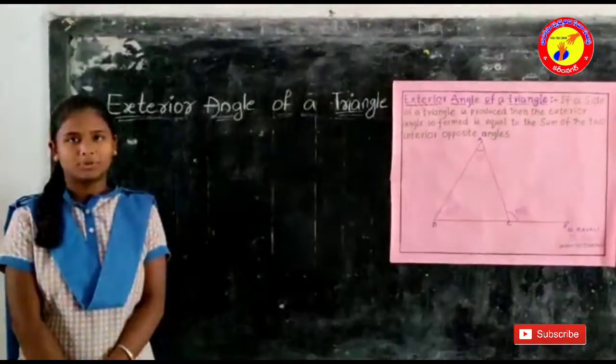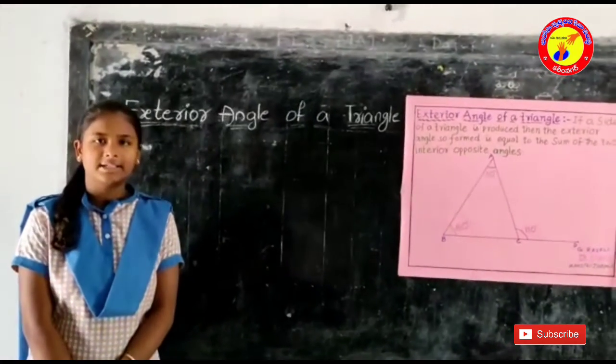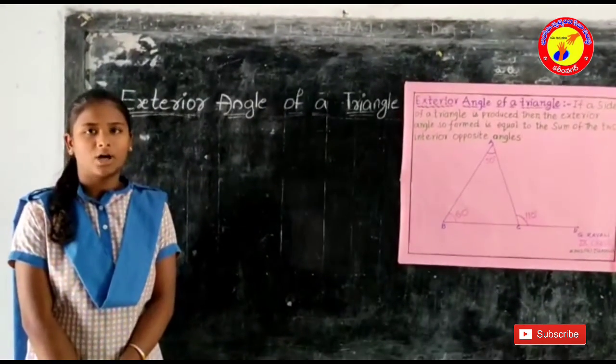If a side of a triangle is produced, then the exterior angle is formed and that exterior angle is equal to the sum of the opposite interior angles.